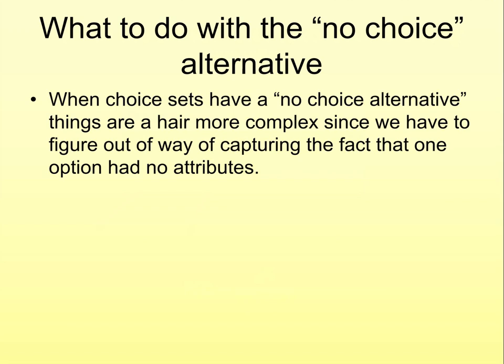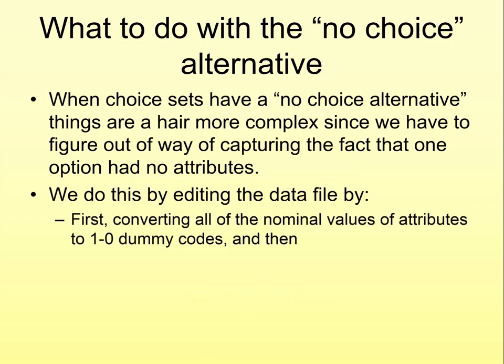Okay, there's one more thing that we have to take care of, and that's what to do where we have to analyze data in choice experiments where we have a no-choice alternative. Now, the way we do this is pretty easy, but it's going to involve a little bit more work. Now, the first thing we're going to need to do is to change our data matrix in JUMP, so instead of having nominal values for the attributes like elaborate or plain or one-year warranty or lifetime warranty, we're going to need by ourselves to go ahead and change these to be one-zero dummy codes, where we're the ones that keep track of what the ones and zeros mean. Hence, for example, we might declare one to be elaborate and zero to be plain.